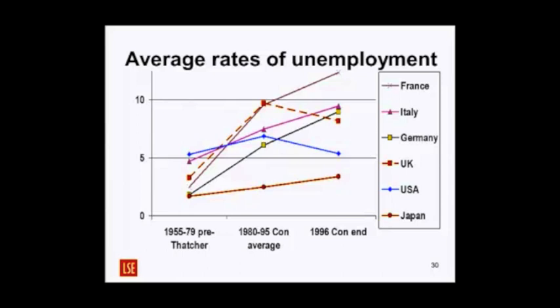What we can see is the two economies with the most flexible labour markets — Britain and the US — are the only ones that seem to turn the corner. Britain and the US turn a corner while everyone else continues upward, even Japan. For America, it's just bumping up and down around 5-6%, not far from Keynesian frictional unemployment.